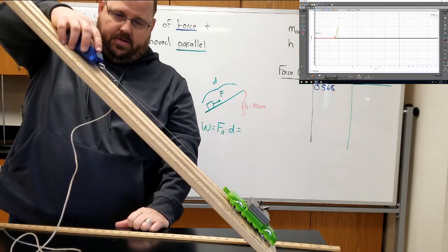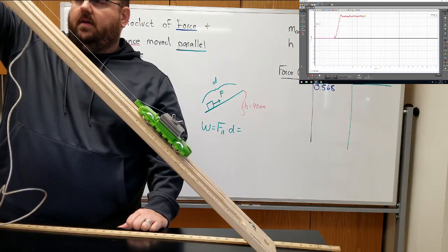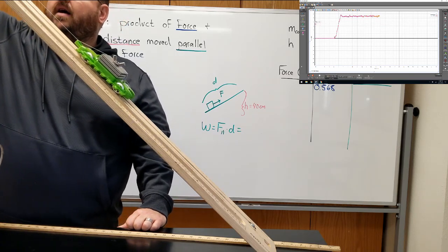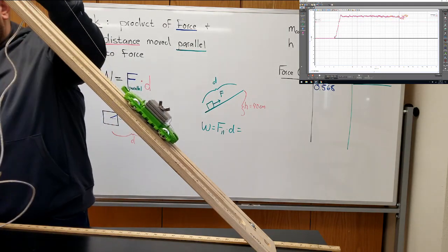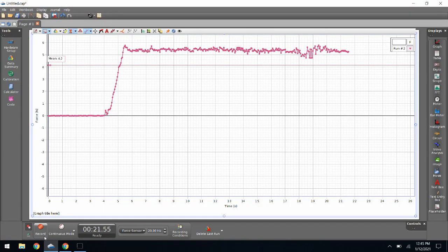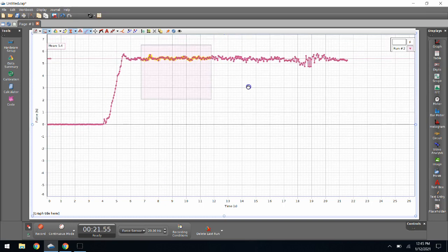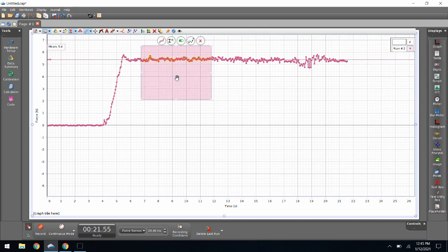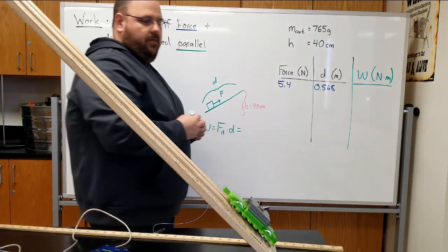Right now the force should be reading zero, and then when I tighten the string and start pulling up, I'm going to pull it at a nice, slow, constant velocity. It actually doesn't matter how high I pull it because the force should be constant the entire time. When I stop collecting data and then highlight the region where I was pulling it up at a nice constant velocity, I can just draw a box around that. I get a mean or average force of 5.4 newtons when I do that.